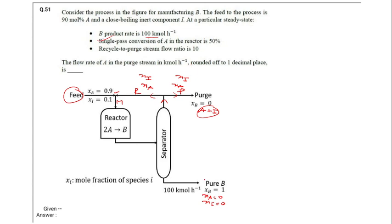Now, they are asking 100 mole. Recycle to purge ratio R by P is given 10. This is the flow rate of recycle stream, the flow rate of purge stream is given as 10.